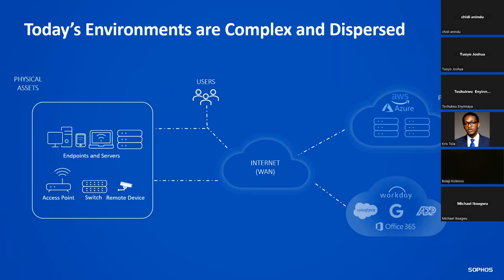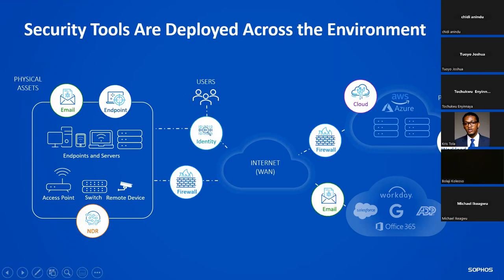Today's environment is dispersed. People work from anywhere, data has moved to the public cloud, and data can reside anywhere. This makes it challenging for cybersecurity teams to have visibility. You need to control what users do and respond to attacks — the only way is to have visibility across multiple layers. Most organizations have deployed several tools, including firewall on-premise, firewall in the cloud, private cloud, and DR. Telemetry from the firewall is really critical.